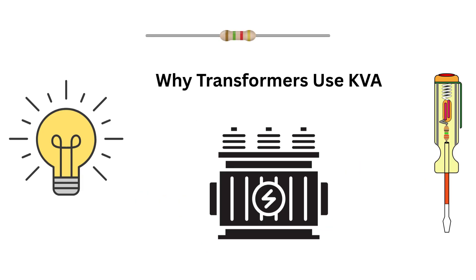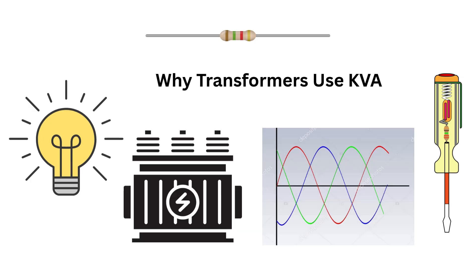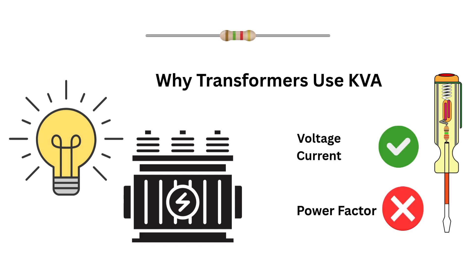So a transformer's job is to transfer electrical energy from one circuit to another without knowing how the power will be used. It doesn't care if the load is resistive, inductive, or capacitive. Because a transformer doesn't consume power — it only carries it. Its rating depends on voltage and current, not power factor. That's why we use KVA, not Kilowatt.